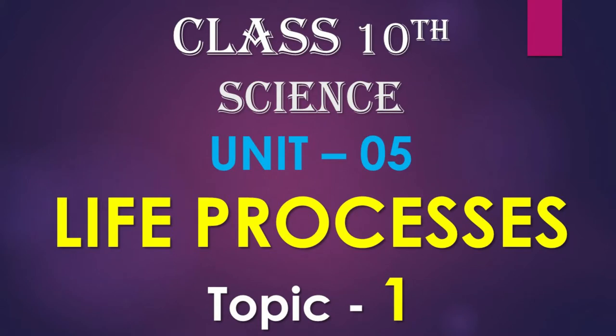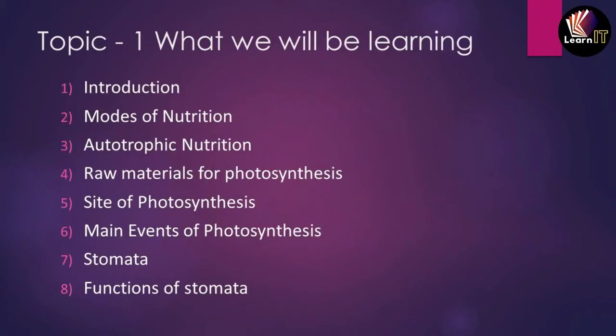Welcome to Learn It. Today we will be discussing Class 10th Science, Unit 5, which is Life Processes. Topic 1 is the major portion of this chapter. What we will be learning today includes: first, the introduction; second, the mode of nutrition; third, autotrophic nutrition; fourth, raw material for photosynthesis; site of photosynthesis; and main events occurring in photosynthesis, stomata, and functions of the stomata.